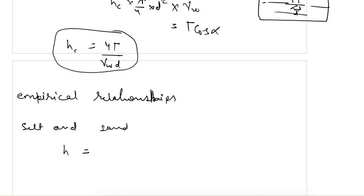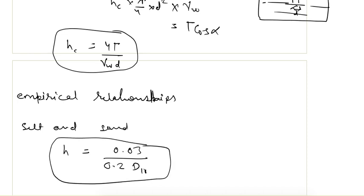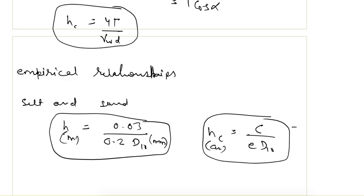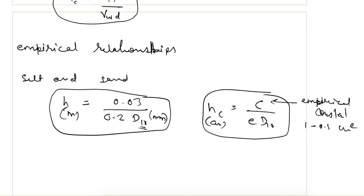One empirical relationship is h = 0.03 / (0.2 × d10), where d10 is the effective size of the sand or silt in mm and h is in meters. Another empirical formula gives capillary rise in centimeters as C / (e × d10), where C is an empirical constant with a value between 0.1 to 0.5 cm².